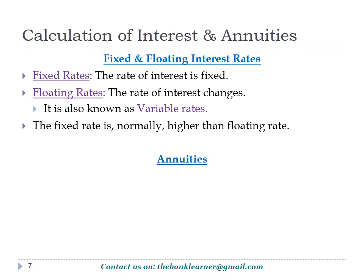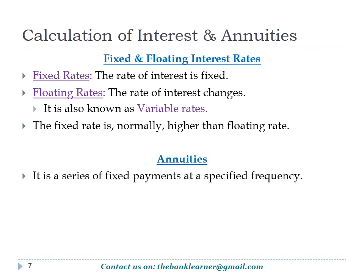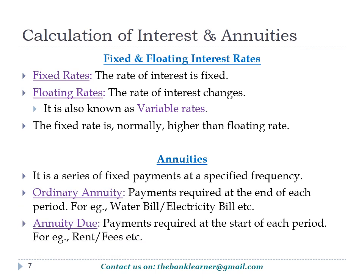Annuities. An annuity is a series of fixed payments at a specified frequency over the course of a period — that is, the payment amount remains the same during the entire tenure. There are two types of annuity: ordinary annuity and annuity due. When simply the term 'annuity' is used, it represents ordinary annuity.